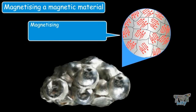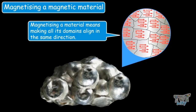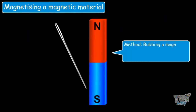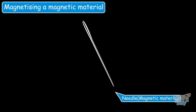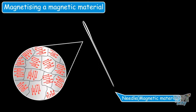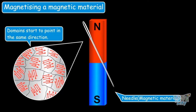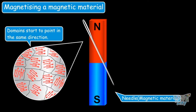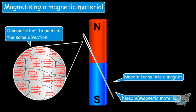Magnetizing a material means making all its domains align in the same direction. This can be done by various methods. A popular method is rubbing a magnetic material against a permanent magnet. For example, if we take a needle — a magnetic material — all its domains are initially pointing in different directions. But when you rub it against a magnet, its domains start to orient in the same direction. After rubbing many times, all domains point in the same direction and the needle turns into a magnet.